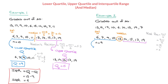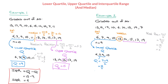The lower portion of the data is everything to the left of the median, and we use it to find the lower quartile Q1. The lower portion is 6, 7, 9, and 10. Since there are four values, the middle lies between 7 and 9, so Q1 equals (7 + 9) / 2 = 16 / 2 = 8.